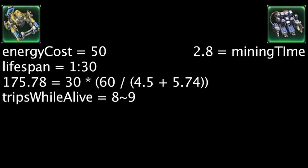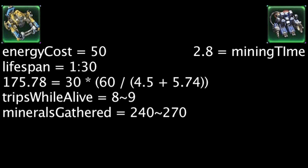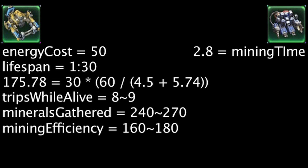During testing, a mule could make 8 to 9 trips during its lifespan. This makes its total minerals gathered to be 240 to 270 minerals, or a mining efficiency of 160 to 180 minerals per minute.